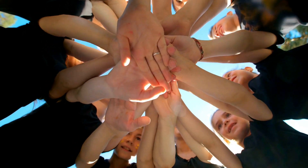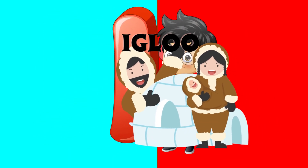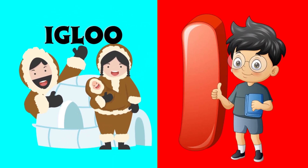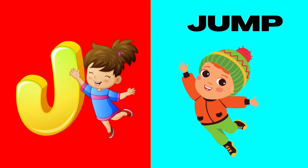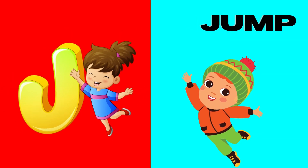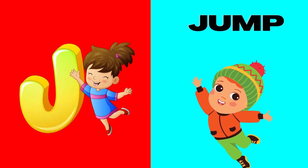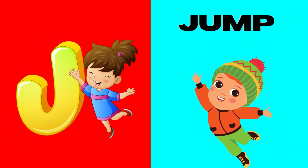I is for igloo, i-i-igloo. J is for jump, j-j-jump.